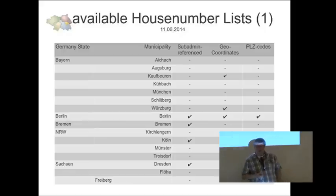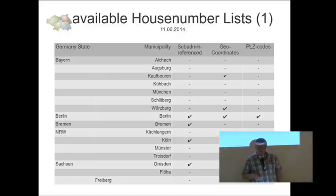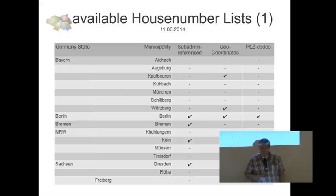Many governments will just give house number lists, and if we ask them we could try to ask if they also have geocoordinates for us. The last column shows that sometimes we also get postal codes from the German postal service, so we can make some more validation if we have problems with the postal boundaries we have.